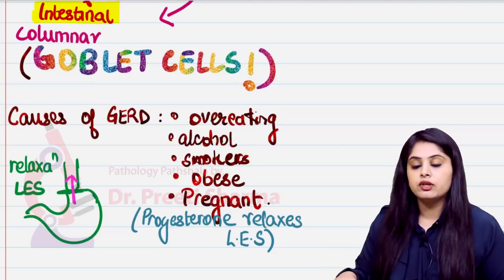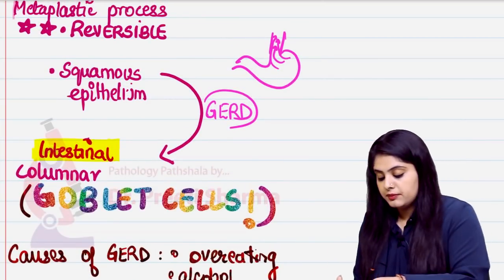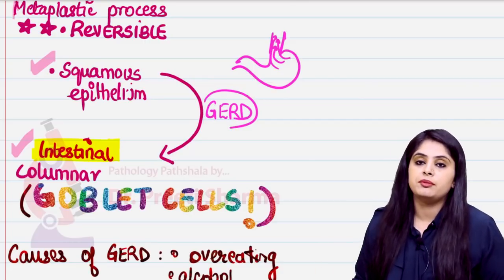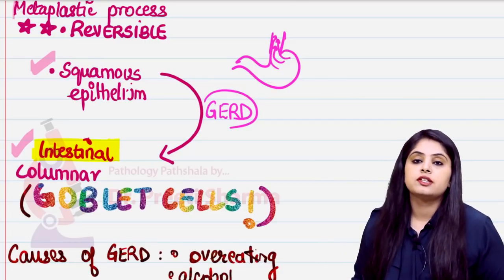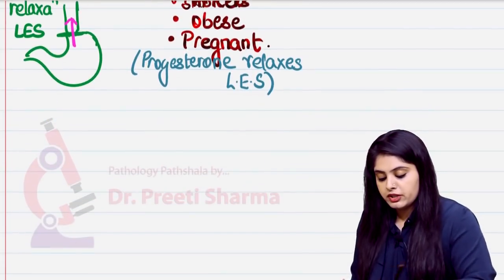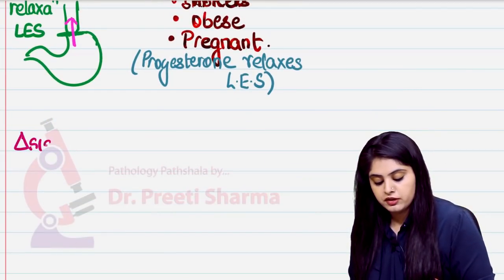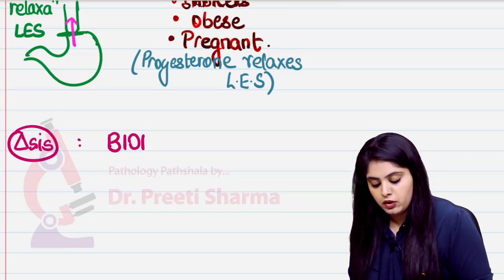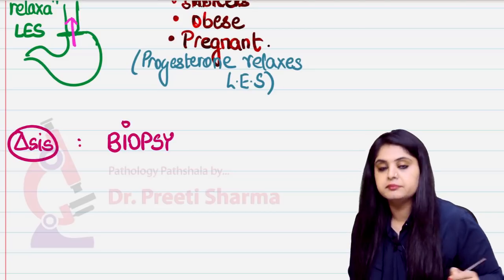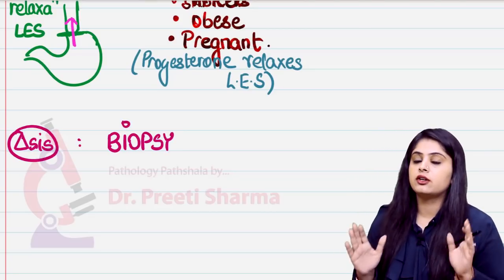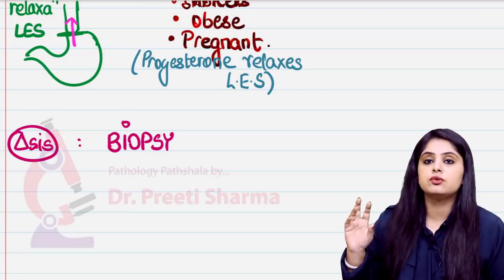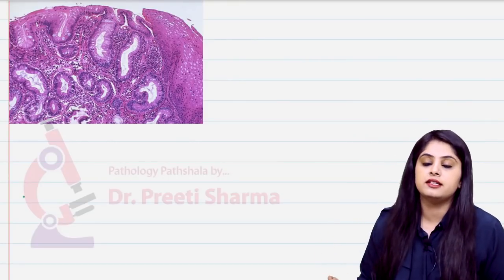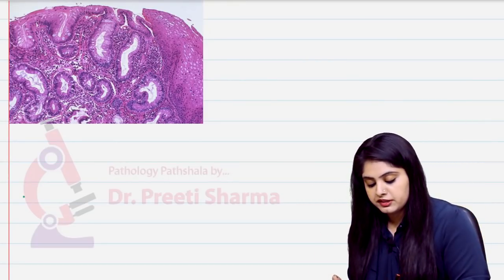Because of all these causes, the squamous epithelium changes into intestinal columnar epithelium. For diagnosis of Barrett's esophagus, a biopsy is always required. On biopsy, if you divide the image into two parts, one part shows squamous epithelium and the other shows a glandular pattern characteristic of intestinal columnar epithelium.